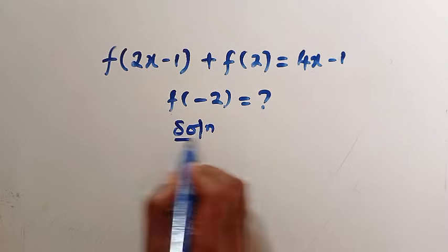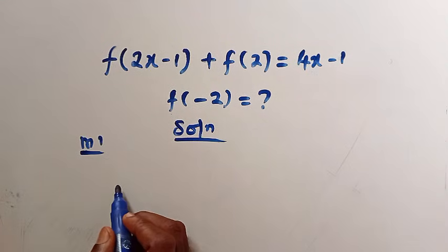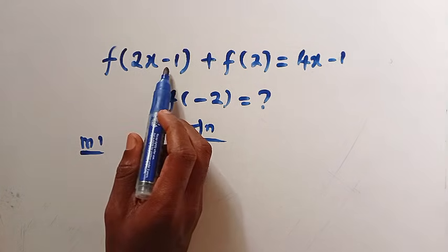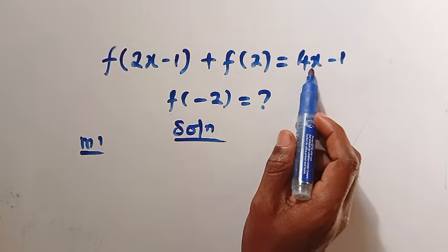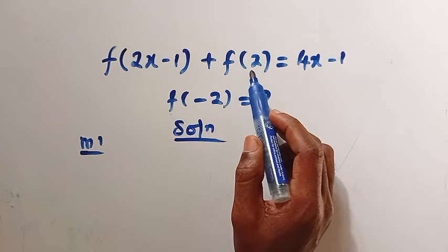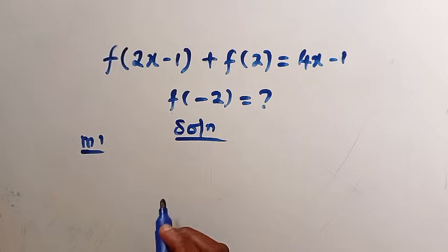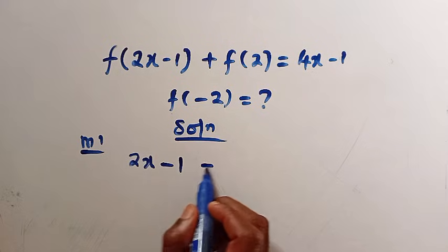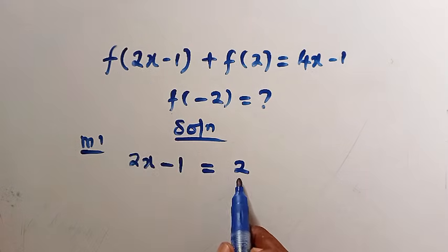We have the solution for the first method. What we are trying to look for is some patterns. Here is the first domain which is 2x minus 1. We focus more on this. Here we have f of 2, and this is 4x minus 1, giving a constant. But we have to know the value of this before we can get f of minus 2. So in the first method, suppose I let 2x minus 1 equal 2.